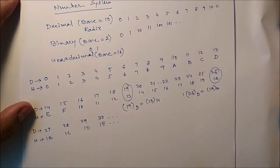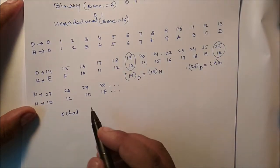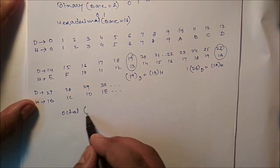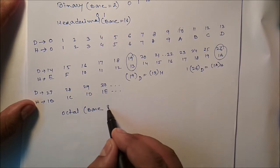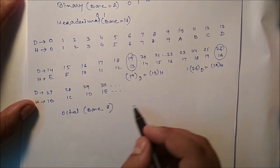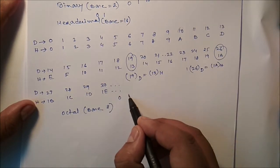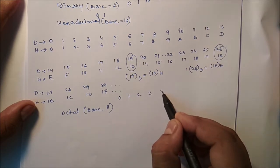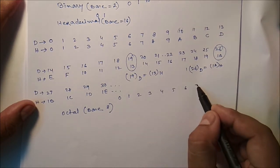Now we can see next is the octal. Suppose octal, next number system is octal. Here the base is 8. So that means 0, 1, 2, 3, 4, 5, 6, 7.